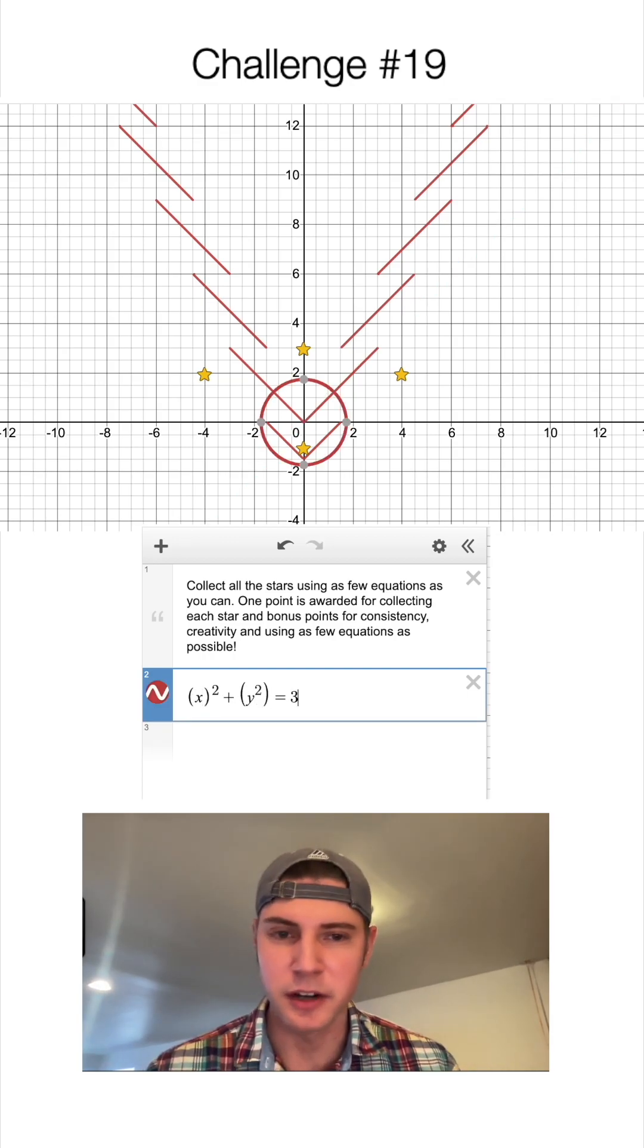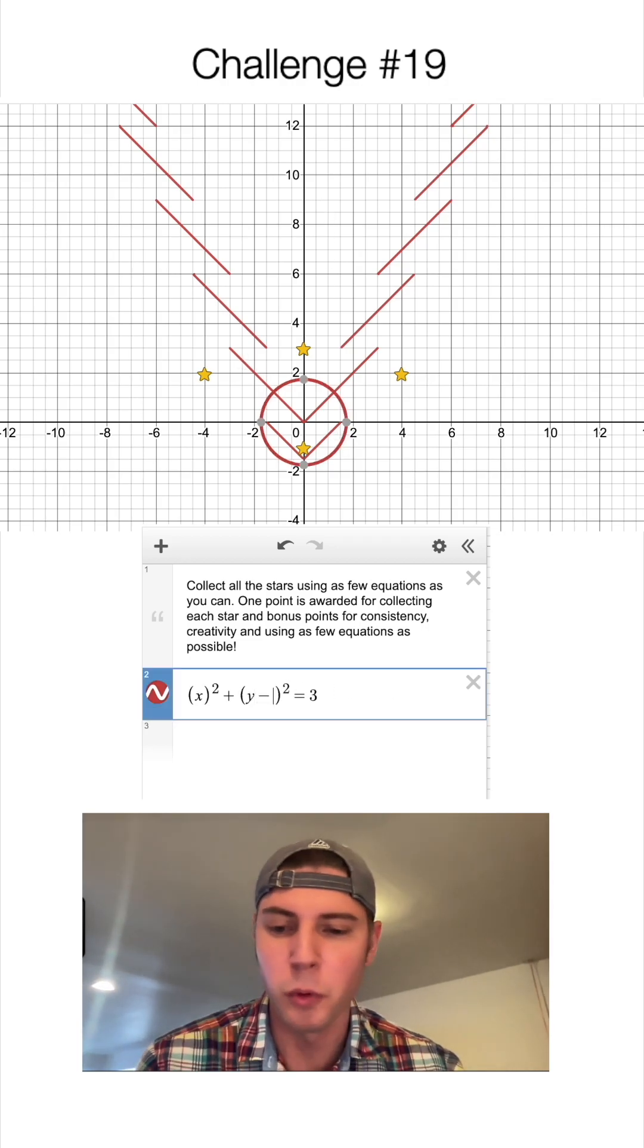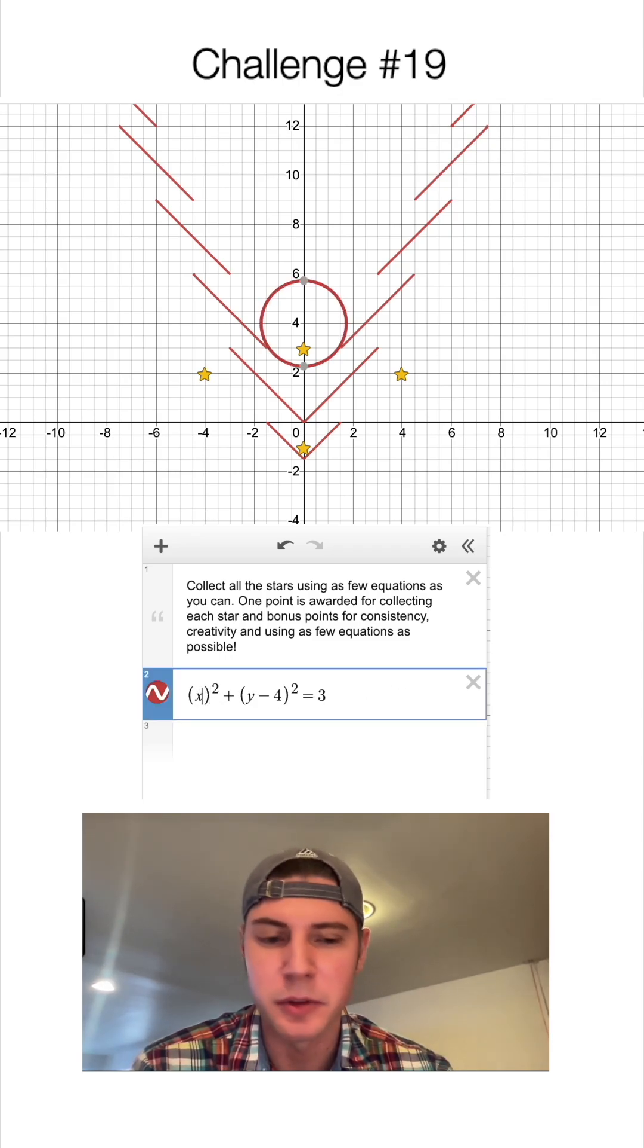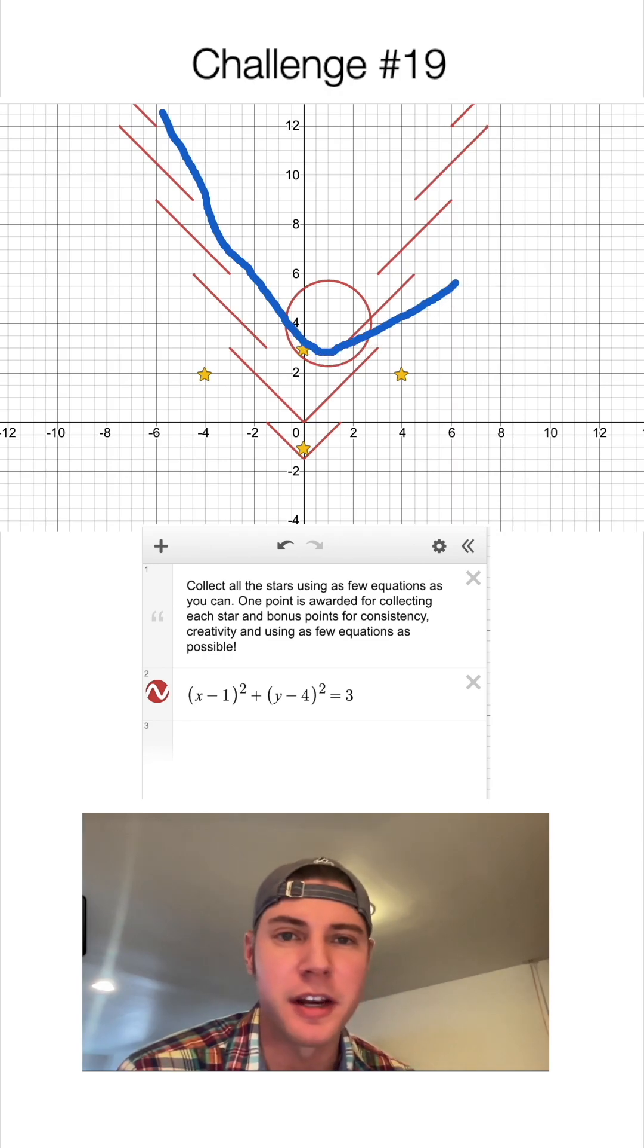We'll go x squared plus y squared and we'll say equals, I don't know, three. So it looks about right. I want to scoot the circle up, so I'm going to say minus four inside here. I want to move it one to the right, so I'm going to say minus one inside here with the x. I think what's going to happen is when the marbles come out they're going to get caught in here and shoot out there.